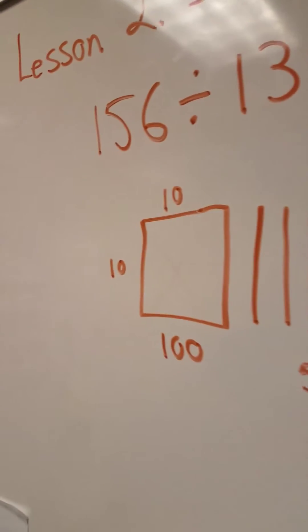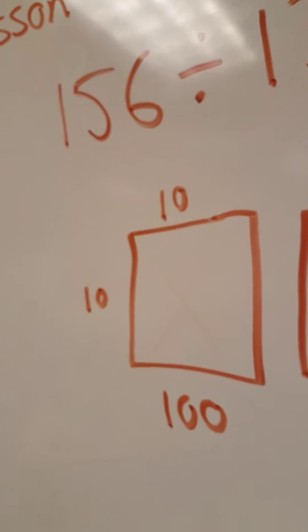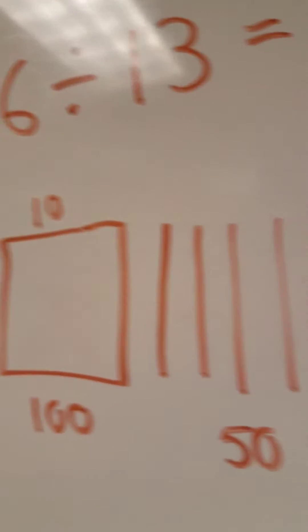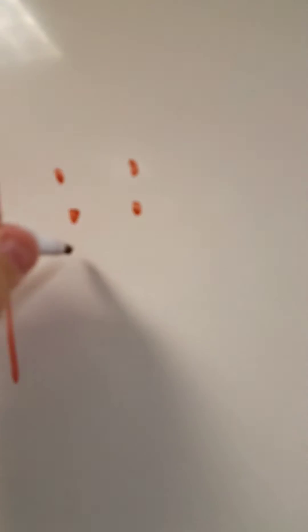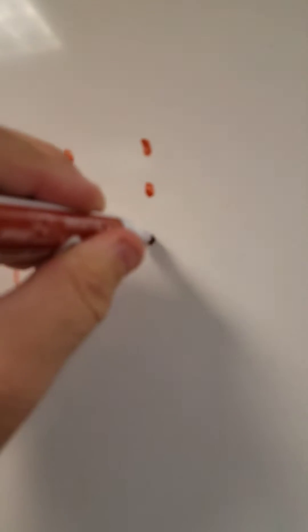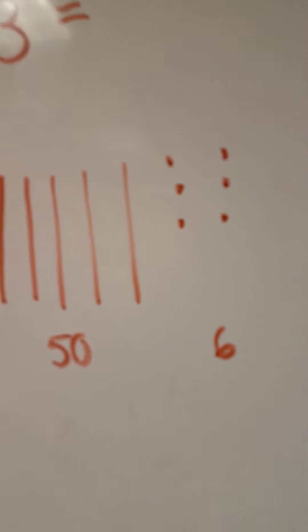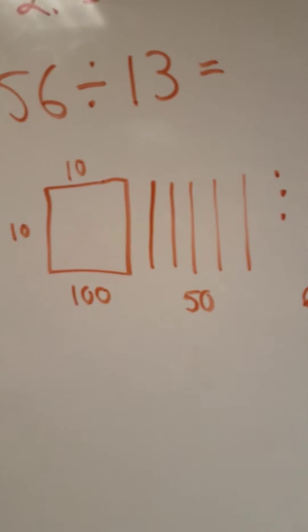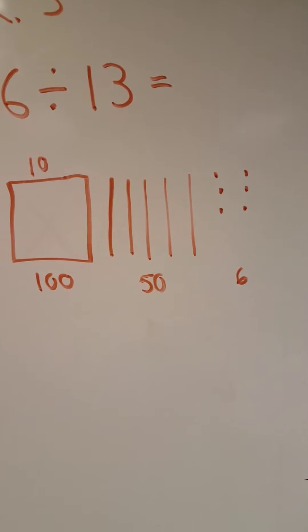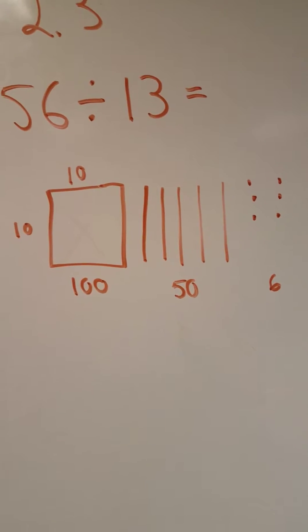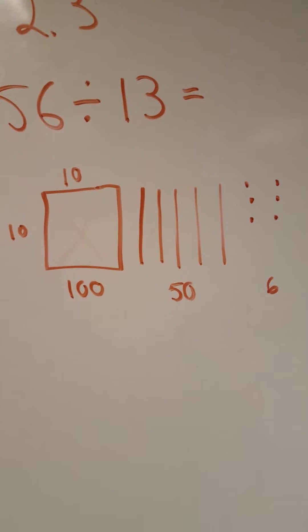And then last but not least, I have 6. So I'm going to draw 6 unit cubes: 1, 2, 3, 4, 5, 6. And of course that's worth 6. So I have 156 right there — that's my model.